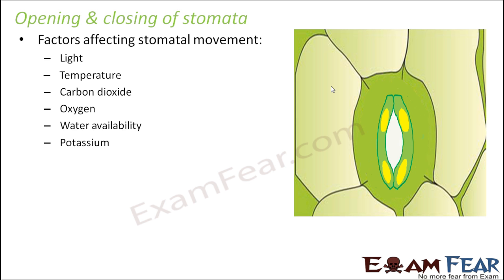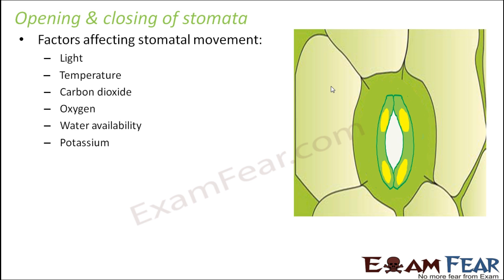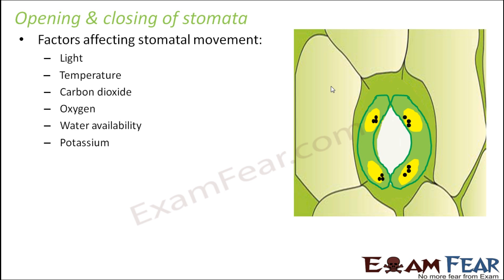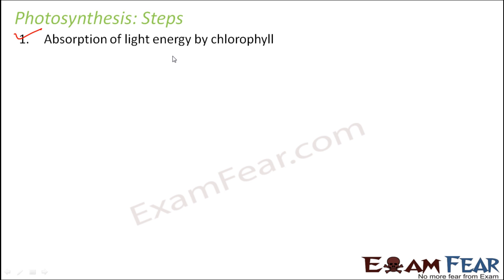We will not get into the detail of these factors right now because you will learn about them in your higher classes. For now, you should know that stomata allows gases to be exchanged — oxygen and carbon dioxide — and their movement is controlled by the guard cells. With this, I think we have discussed all the important factors in photosynthesis. In photosynthesis, the first thing required is sunlight, which is absorbed by the green pigment called chlorophyll, present in the mesophyll layer of leaves.